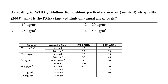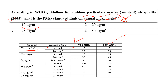Question eighteen: According to WHO guidelines for ambient particulate matter air quality 2005, what is the PM2.5 standard limit on an annual basis? The WHO issued air quality standards in 2005 and revised them in 2021. For the 2005 standards, the PM2.5 annual basis value is 10 micrograms per cubic meter. If the question asks on a 24-hour basis, the right answer would be 25 micrograms per cubic meter. So the right answer is 10 micrograms per cubic meter.